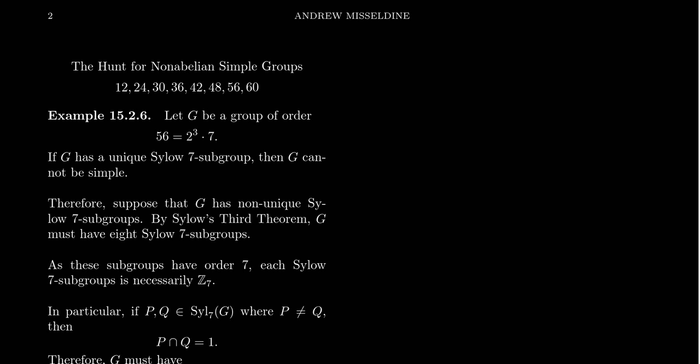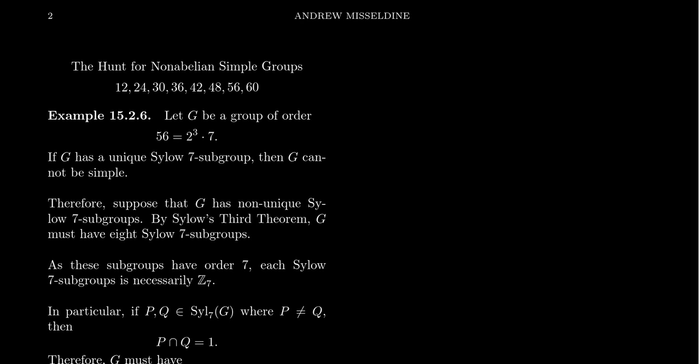Continuing our search for non-abelian simple groups, we have lowered our list just to the numbers 12, 24, 30, 36, 42, 48, 56, and 60. We do know there is a non-abelian simple group of order 60, that's A5, but are there any smaller than that?